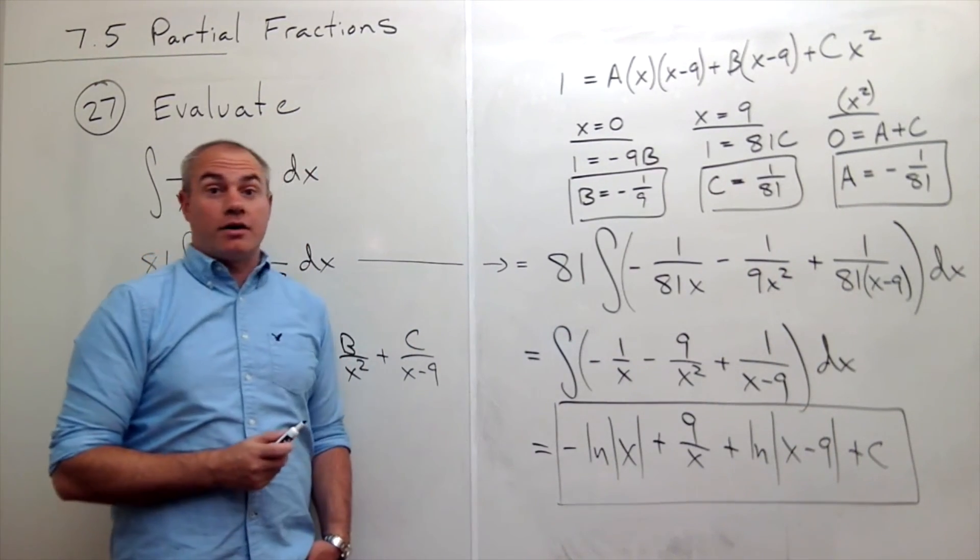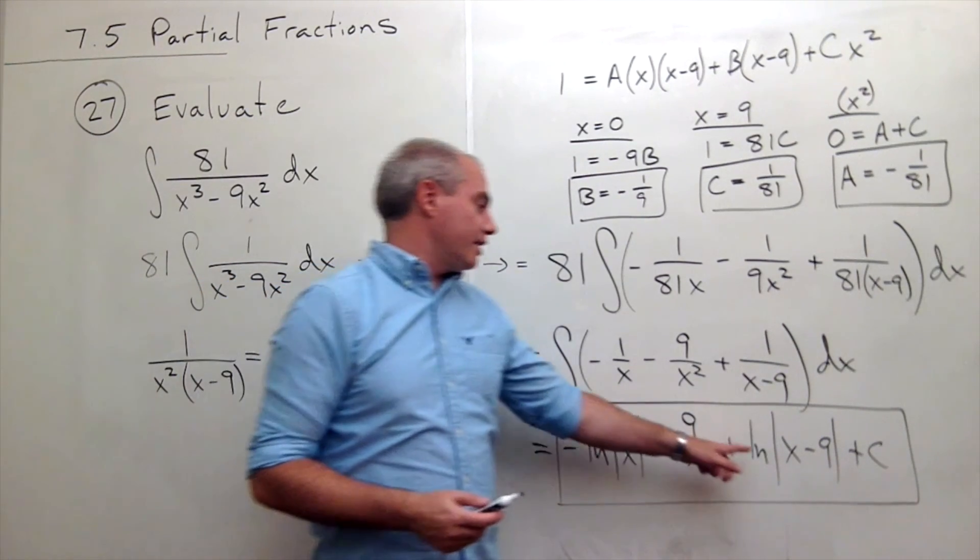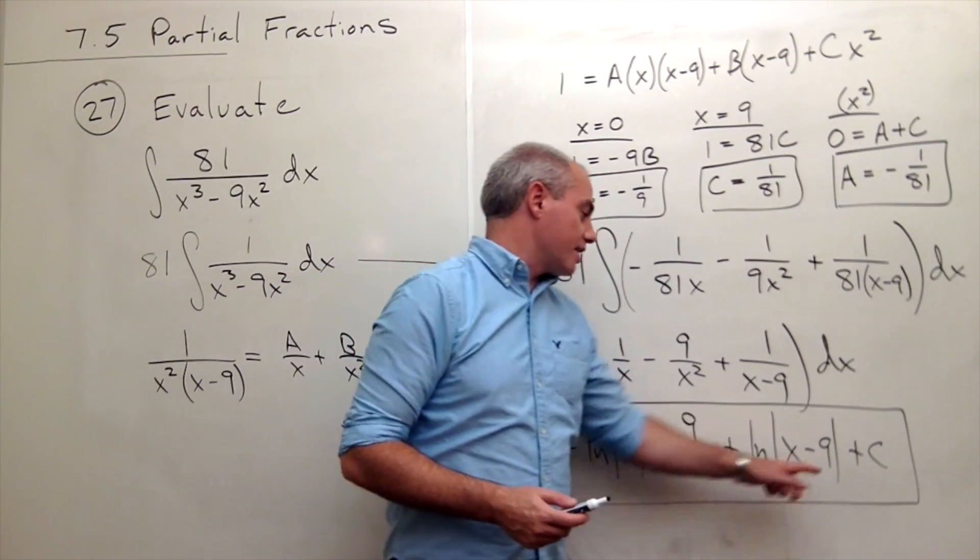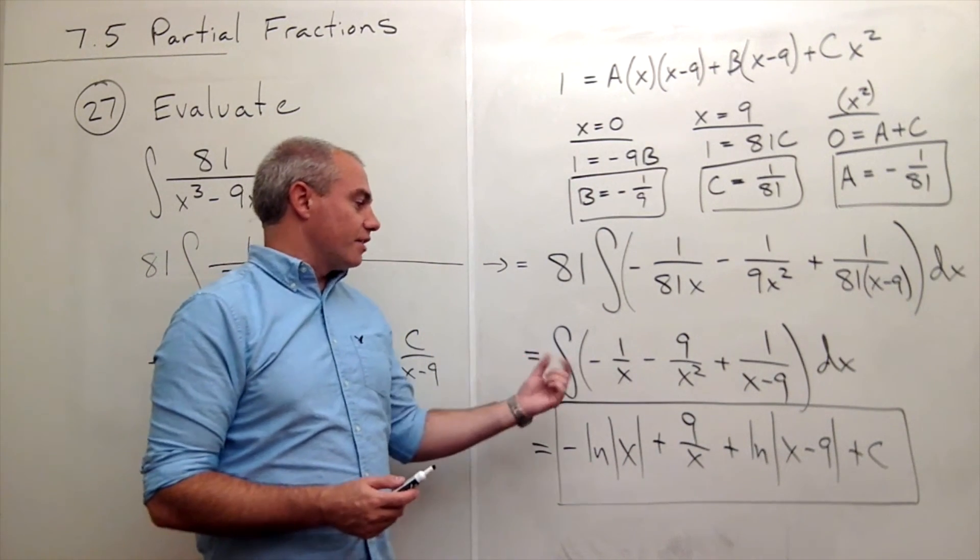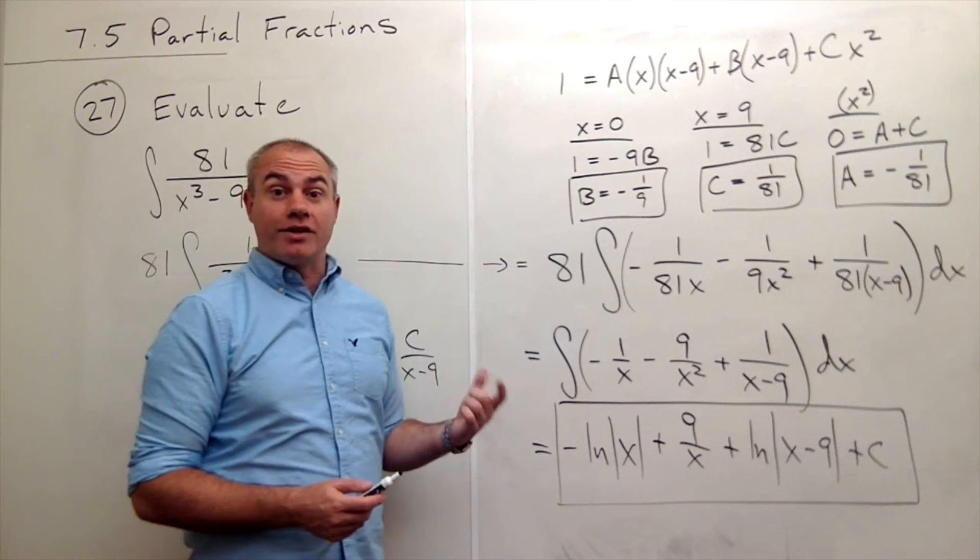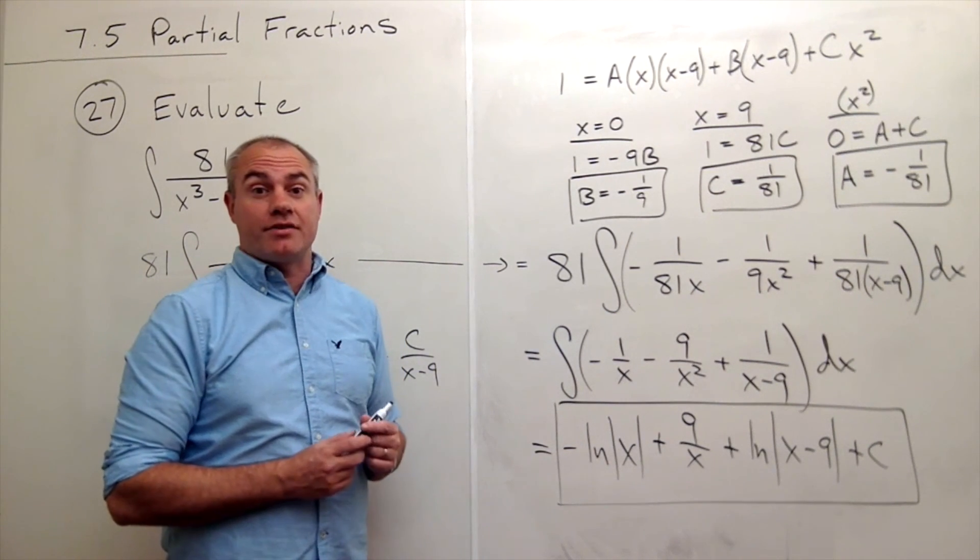And we have our antiderivative. Now, if I wanted to, I could combine the ln of x minus 9 and the negative ln of absolute x into one fraction if I really wanted to using the rules of logarithms, but this is a sufficient answer.